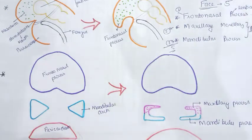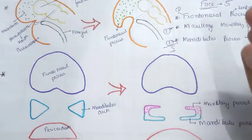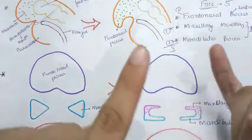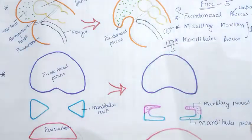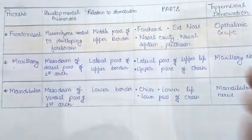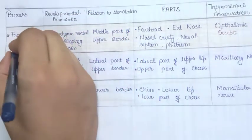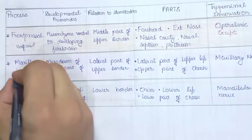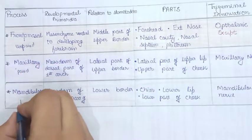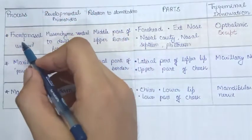We will now see what structures these three primordial processes give rise to, first as an overview and then in detail in upcoming videos. This table is sufficient to cover face development briefly. We have five processes: the frontonasal process (unpaired), and the maxillary and mandibular processes (paired), giving five in total.